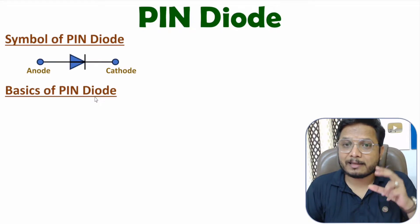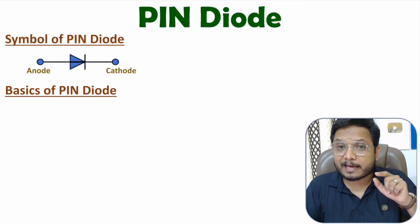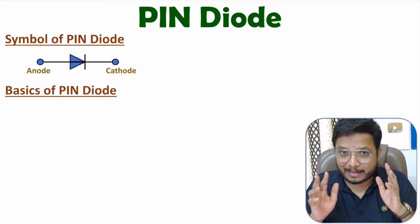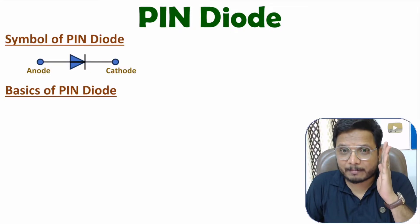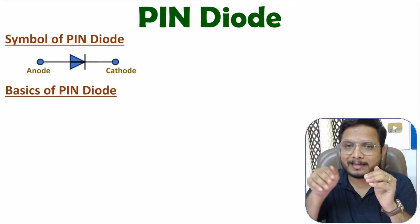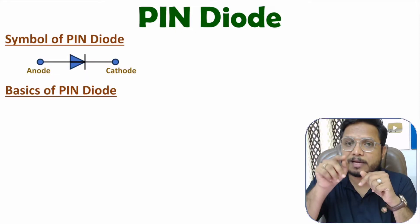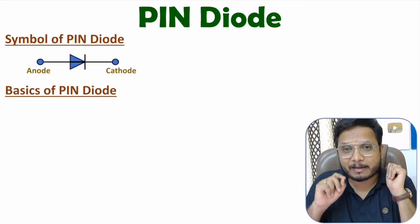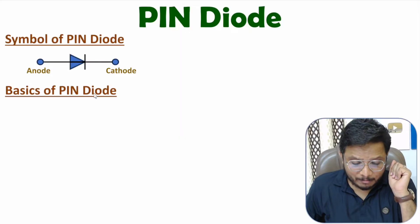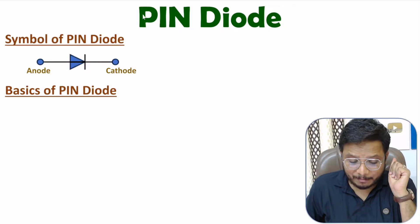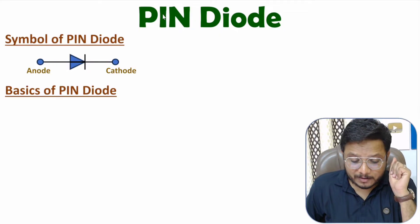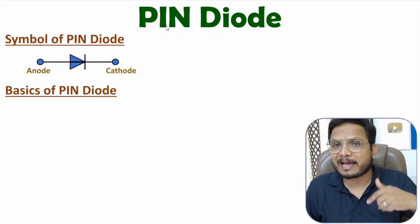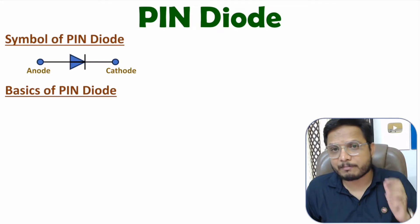Now I'll discuss the basics of PIN diode. First, you need to understand the name P, I, and N. We have a P-type layer, then an intrinsic layer, and then an N-type layer. The intrinsic layer is sandwiched in between the P-type and N-type layers. The name of the PIN diode is based on its structure: P-type, Intrinsic, and N-type.